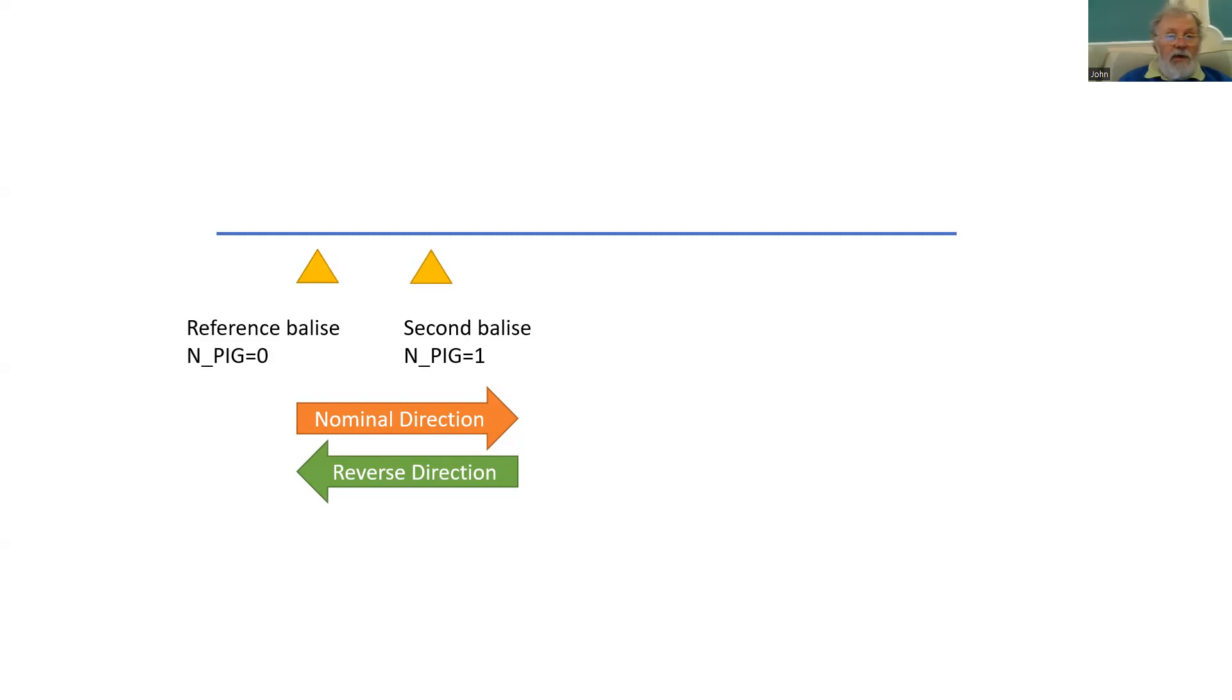When the onboard reads the sequence of balise group IDs and headers in the messages, then it can establish whether it passed over the balise group in the nominal or reverse direction.